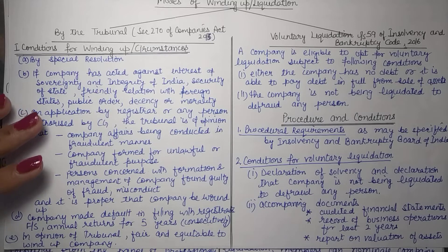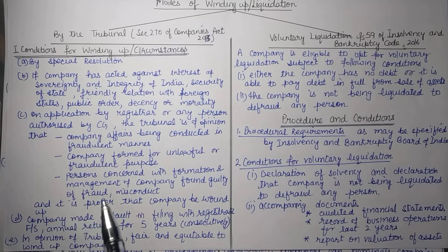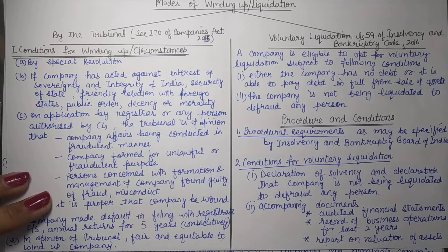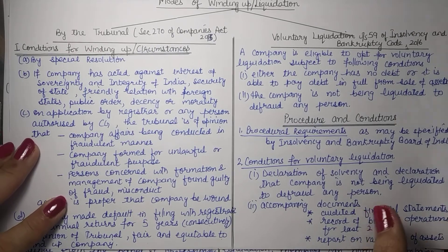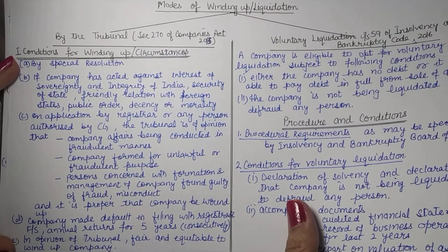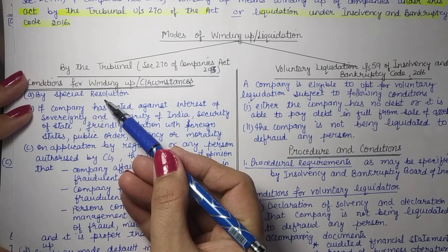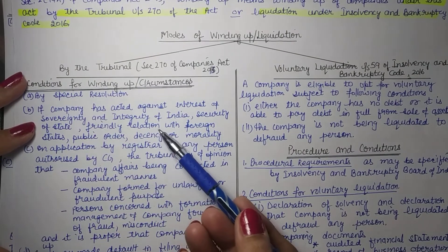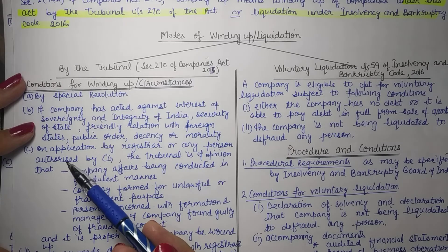Number 5 — a company can be dissolved by the tribunal if the tribunal is of the opinion that it is just and equitable to wind up the company, whether due to the nature of the business or the way the company's affairs are being managed. The company will be given an opportunity to be heard. So these are the 5 circumstances when the tribunal can pass an order for winding up. The petition can be filed by the company itself, by the central government or any person authorized by them, or by the registrar.